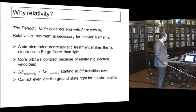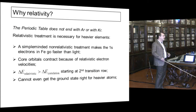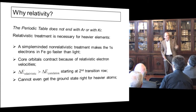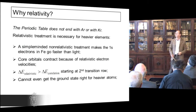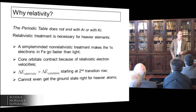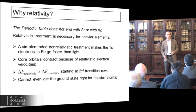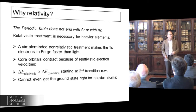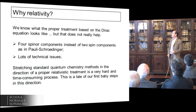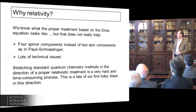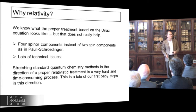Why relativity? Well, because the periodic table doesn't end with Krypton. A relativistic treatment is necessary for every element. If you do a simple-minded toy exercise, you figure that if you don't contract the Bohr radius as the atomic number increases, sooner or later the electrons will break the speed of light. What happens is that they don't — core orbitals contract starting from the second transition row on. Correlation energy that we care so much about counts less than relativistic corrections.